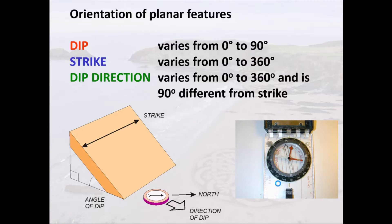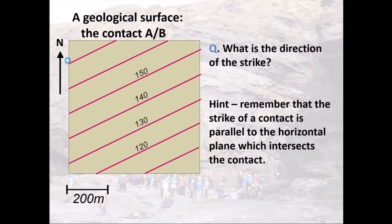The dip direction is the compass bearing in the direction of dip, and it's always perpendicular to strike. Dip can only vary from 0 to 90 degrees. Strike varies from 0 to 360 since it's a compass direction, and similarly dip direction varies from 0 to 360 and is always perpendicular to strike. Now let's go back to our geological contact AB in map view and figure out how to read these three components from structural contours.